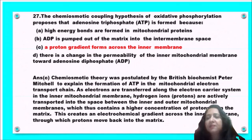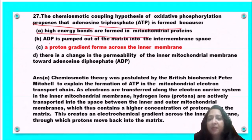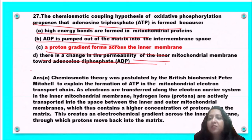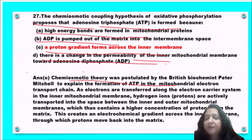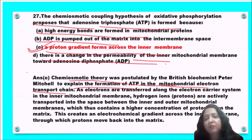Next question: the chemiosmotic coupling hypothesis of oxidative phosphorylation proposes that ATP is formed because of — high energy bonds in mitochondrial proteins, ADP pumped out of matrix, a proton gradient across the inner membrane, or change in permeability of inner mitochondrial membrane? This theory was proposed by British biochemist Peter Mitchell to explain ATP formation in the mitochondrial electron transport chain. Option C, a proton gradient forms across the inner membrane, is the correct answer.